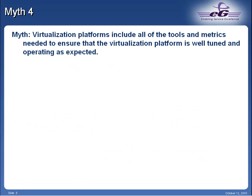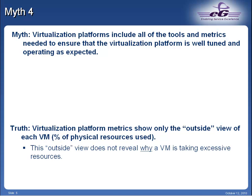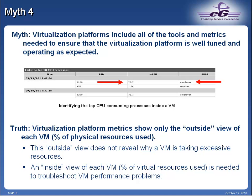The fourth myth is that virtualization platforms include all the tools and metrics needed to ensure that the platform is well-tuned and operating as expected. The truth is virtualization platform metrics show only the outside view of each VM. The outside view does not reveal why a VM is taking excessive resources. Rather, an inside view of each VM is needed to troubleshoot VM performance problems. In this example, CPU has spiked on a virtual desktop because the user was running Windows Media Player. Without an inside view into each VM, you would be at a loss for why CPU was high on one desktop but not another.